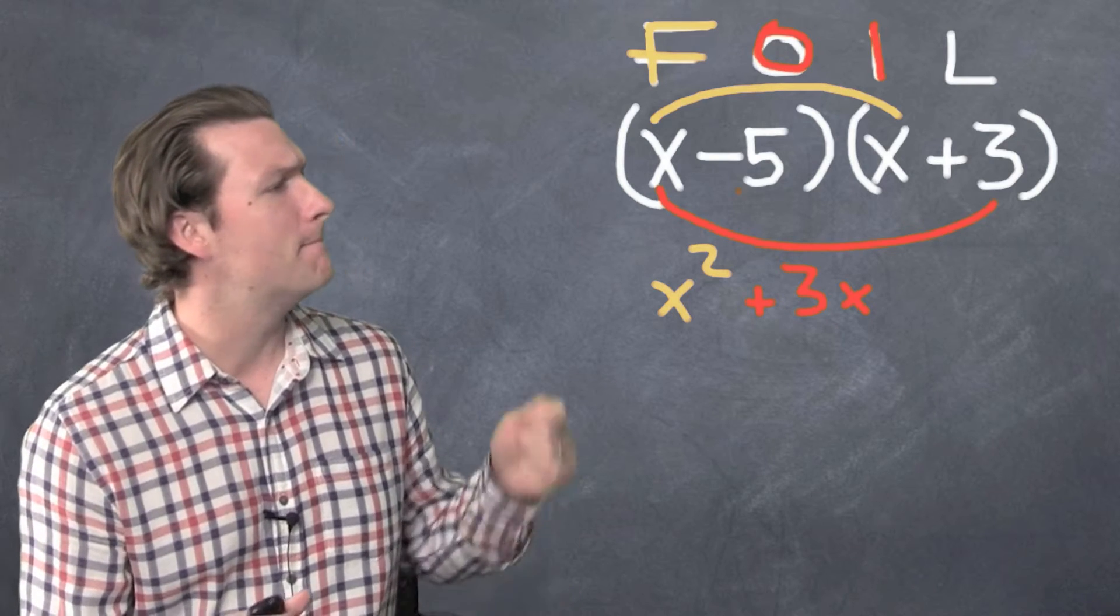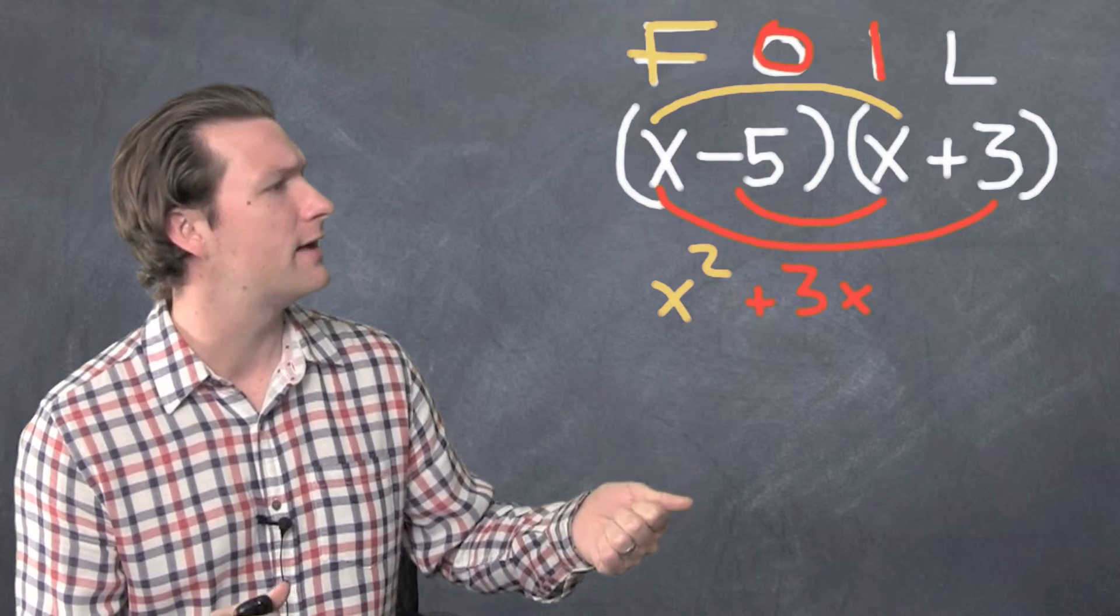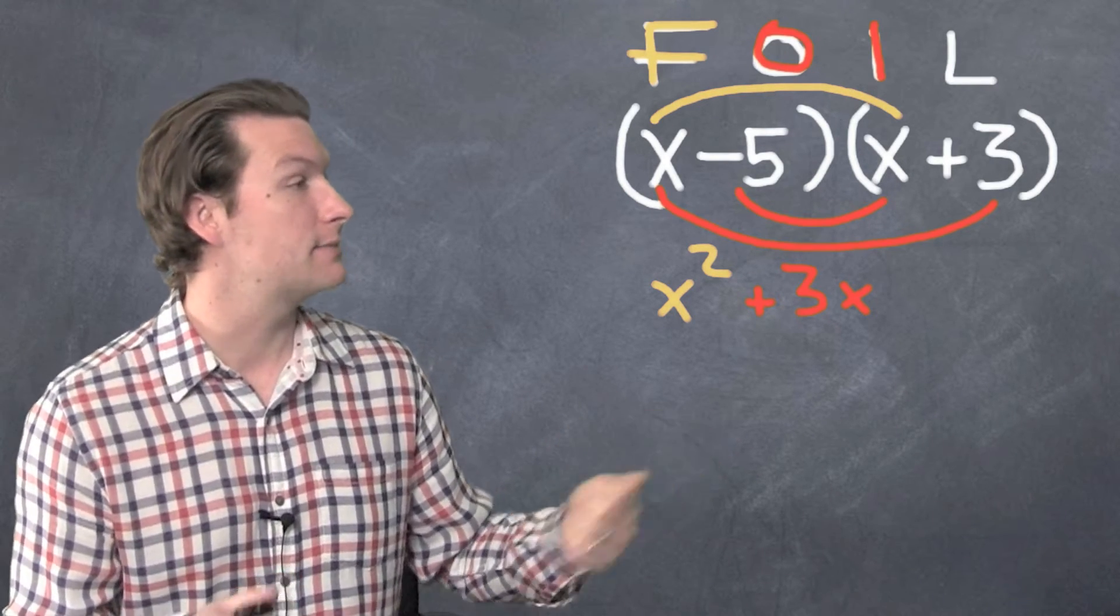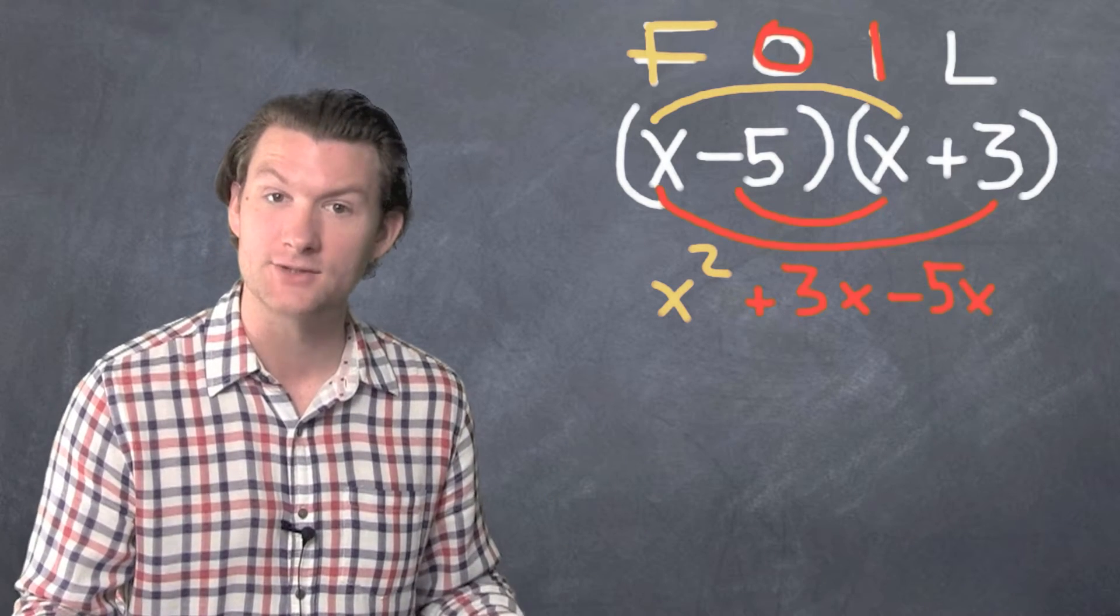Insides. Minus five, negative five, times X. X times negative five is negative 5X. Insides are done.